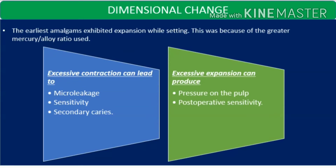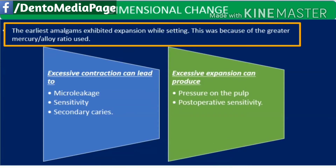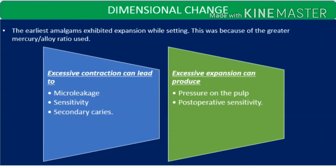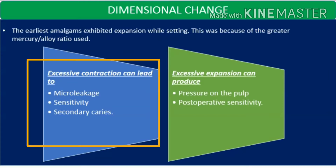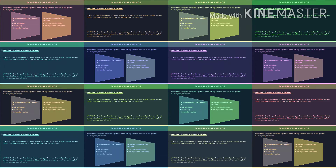Beginning with the first property of dental amalgam: dimensional change. The earliest amalgams exhibited expansion while setting, because of the greater mercury to alloy ratio used. Amalgams may expand or contract depending upon manipulation. Excessive contraction can lead to micro leakage, sensitivity and secondary caries. And excessive expansion can produce pressure on the pulp and post-operative sensitivity.